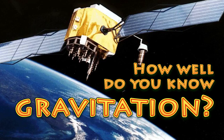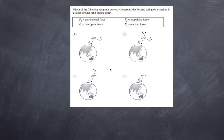Welcome to High School Physics Explained. This is my video on the 'How Well Do You Know' series, and today I'm going to talk about gravitation. As with any of these videos, it's worthwhile to stop the video and have an attempt at the question before you proceed with the solution. Here's the first question: which of the following diagrams correctly represents the forces acting on a satellite in a stable circular orbit around the earth?